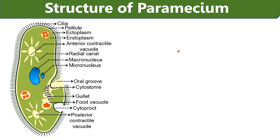Now let's talk about the structure of paramecium. The components of paramecium include cilia, pellicle, oral apparatus, cytoplasm, food vacuoles and contractile vacuoles. We will discuss the function of each organelle.